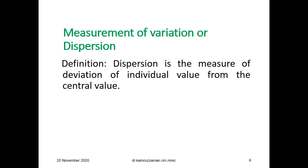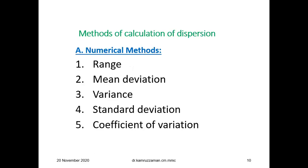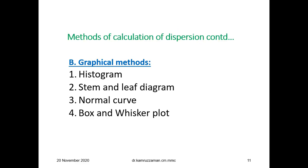Measurement of variation or dispersion — dispersion is the measure of deviation of individual values from the central value. Numerical methods of calculating dispersion include range, mean deviation, variance, standard deviation, and coefficient of variation. Graphical methods of calculating dispersion include histogram, stem and leaf diagram, normal curve, and box and whisker plot.